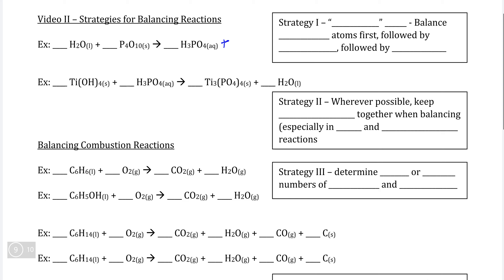In this first example, the synthesis of phosphoric acid, we use a strategy called the major hydroxide approach. This is simply to start by balancing what we call the major atoms of a reaction first, which are any atoms other than oxygen or hydrogen.